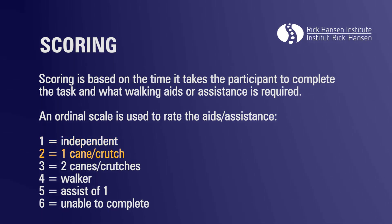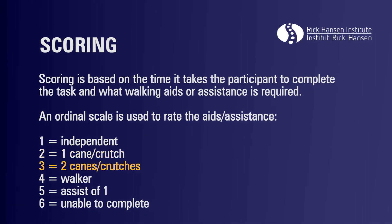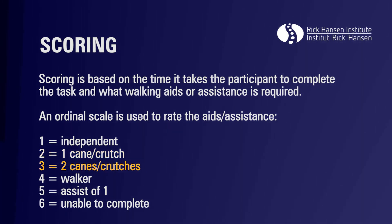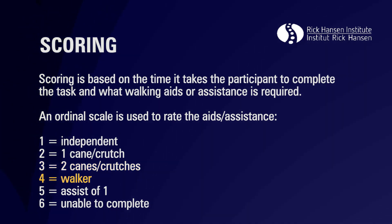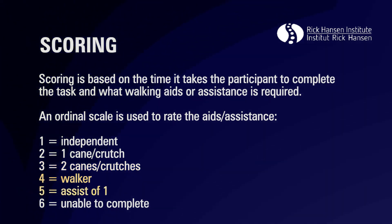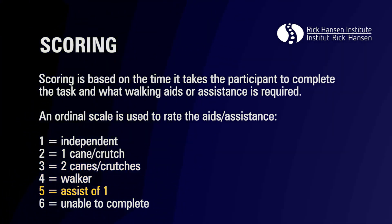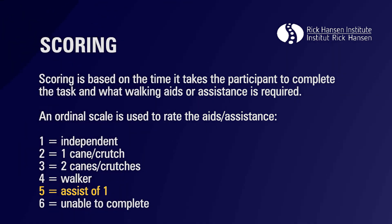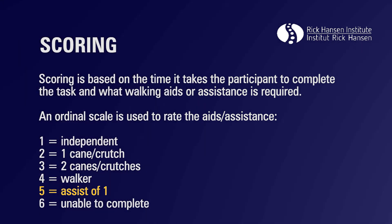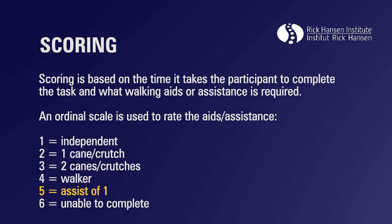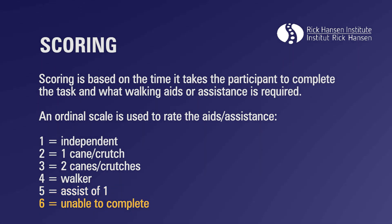Two, if the participant uses one cane or one crutch. Three, if the participant uses two canes or two crutches. Four, if a walker is used. Five, if the assistance of one person is required to complete the task, whether that's minimal, moderate, or maximal assistance. And six, if the participant is unable to complete the task.